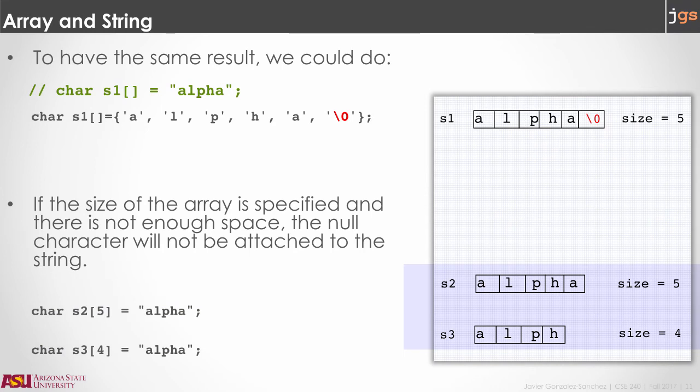As you notice, even though you are using strings to initialize the array, because the arrays are too small, you are losing the null character. Therefore, s2 and s3 are not going to work like strings. Even though you are initializing s3 with alpha, some characters are not going to be included in the array.